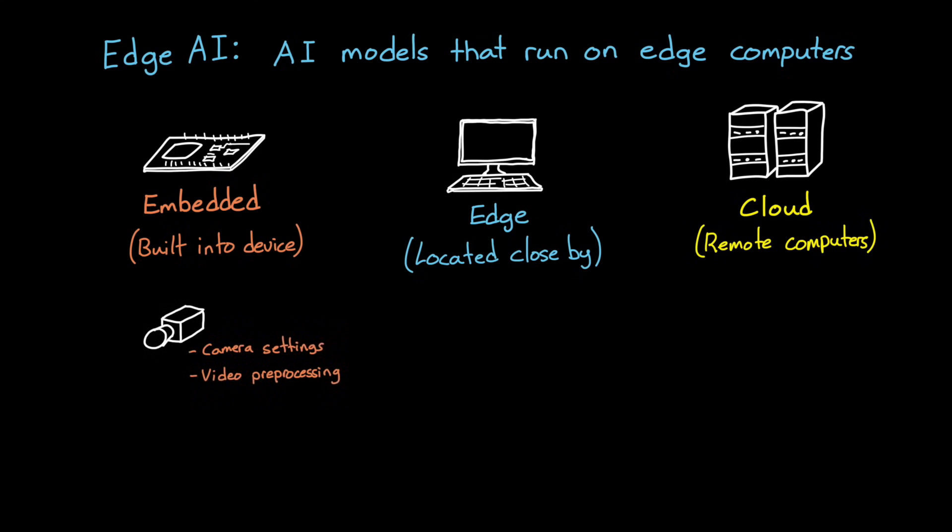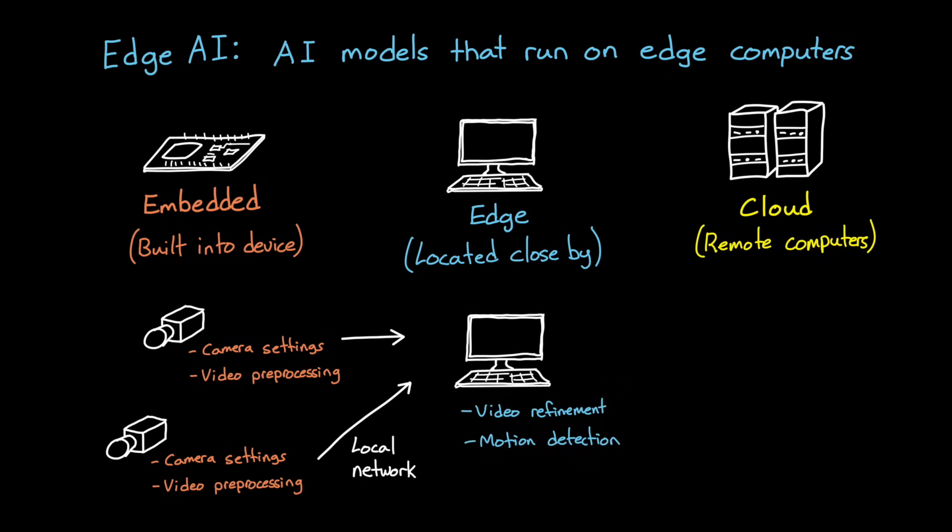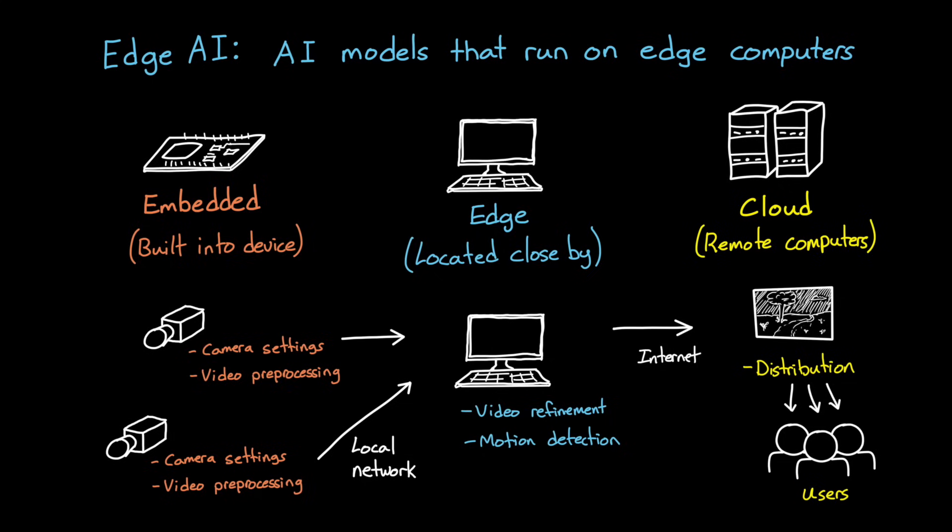For example, a security camera could have an embedded processor with code that manages the camera settings and then pre-processes the video. This video, along with video from other local cameras, could be sent to an edge computer where they further refine the images and run motion detection algorithms. Now, if motion is detected, then that snippet of video could be sent to a cloud computer for broader distribution to the end users.